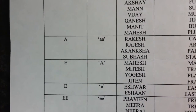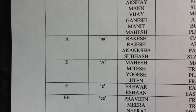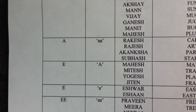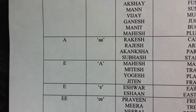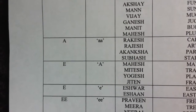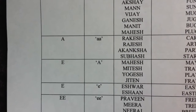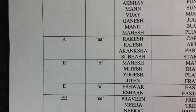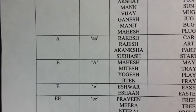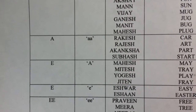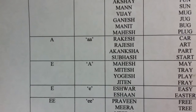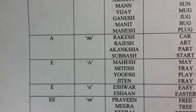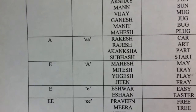E is always pronounced as the 'ay' sound, as long as it is not the first letter of the name. Examples include Mahesh, Mitesh, Yogesh, Jiten, etc.